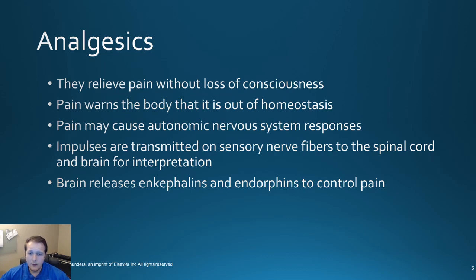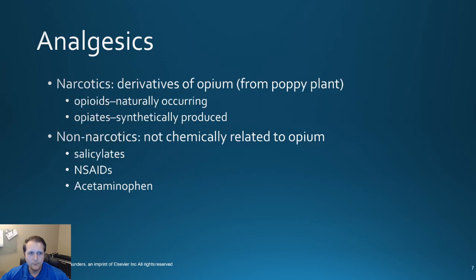If you've ever heard anyone talk about a runner's high — that euphoric feeling during long distance running — it actually has to do with the brain releasing enkephalins and endorphins. When you're looking at analgesics, there are two main categories. We've talked about some of these before, especially our non-narcotics, which include your salicylates, your NSAIDs, and acetaminophen. The narcotics are going to be things that are derivatives of opium, which come from the poppy plant. Some are very naturally occurring, like heroin, morphine, and codeine — those are opiates. Opioids, on the other hand, are synthetically produced, like fentanyl or buprenorphine.